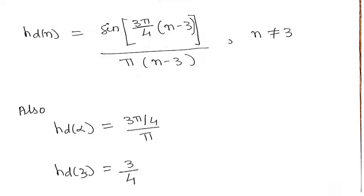Substituting the values of omega c and alpha, we get HD of N as sin 3 pi by 4 N minus 3, divided by pi N minus 3, for the case N not equals 3. And for the second case, for N equals 3, we get HD of 3 as 3 by 4.